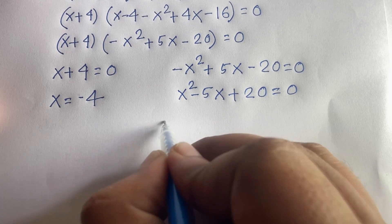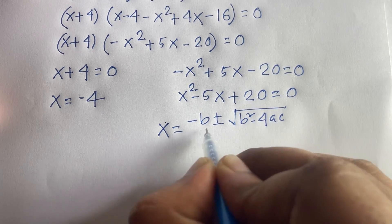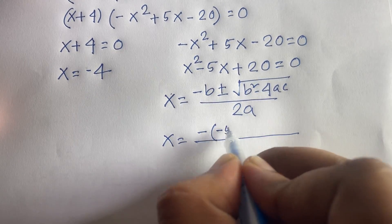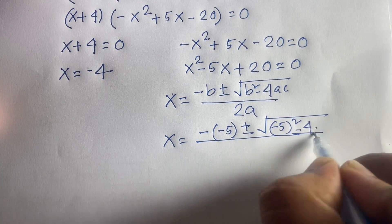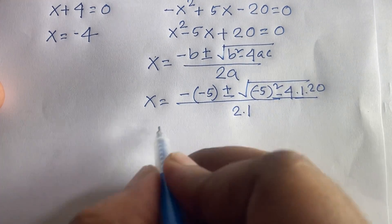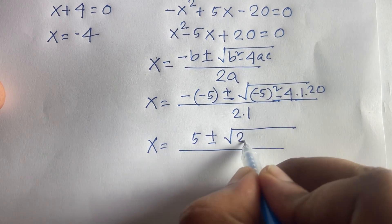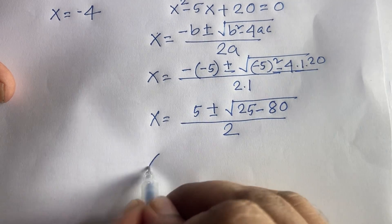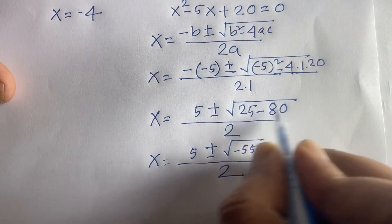To solve the quadratic, I apply the formula x equals minus b plus or minus square root of (b squared minus 4ac) over 2a. Here b is minus 5, a is 1, and c is 20. So x equals 5 plus or minus square root of (25 minus 80) over 2, which gives square root of minus 55 over 2.